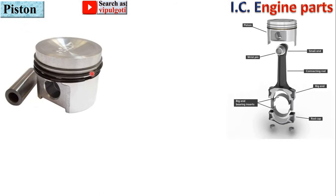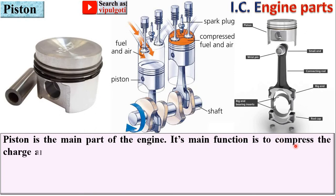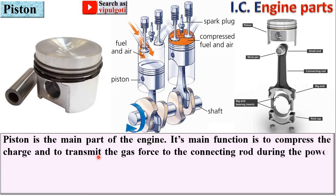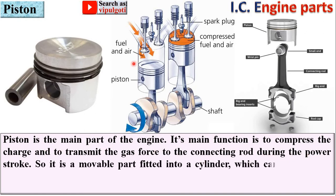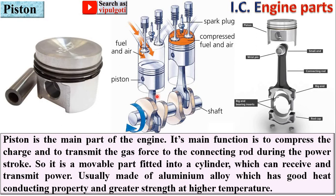This electrical spark ignites the gasoline, or air-fuel mixture, in the combustion chamber. Next part is the piston. Here you can see the piston surrounded by piston rings, connected by the connecting rod in the IC engine. The piston is the main part of the engine — its main function is to compress the charge and to transmit the gas force to the connecting rod during the power stroke. It is a movable part fitted into the cylinder which can receive and transmit power.